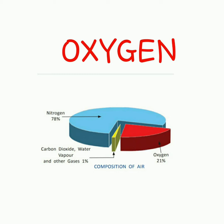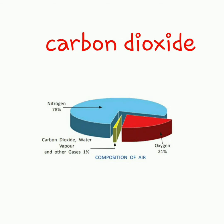All living things need oxygen. It is 21% in the air. Some other gases are also there. Carbon dioxide is used by plants for photosynthesis — meaning to make food, they need carbon dioxide. Carbon dioxide is also used in fire extinguishers.